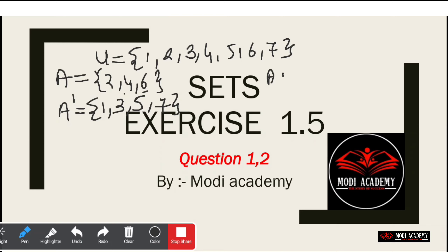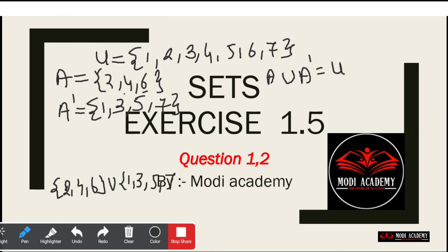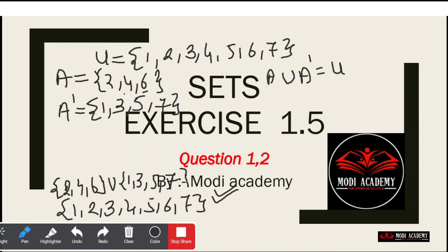Always remember that A union A dash gives us the universal set. So A = {2, 4, 6} union A' = {1, 3, 5, 7} gives us {1, 2, 3, 4, 5, 6, 7}, which is exactly the universal set. If you get the universal set as your answer, you are right; otherwise you are wrong. So this is what complement means.